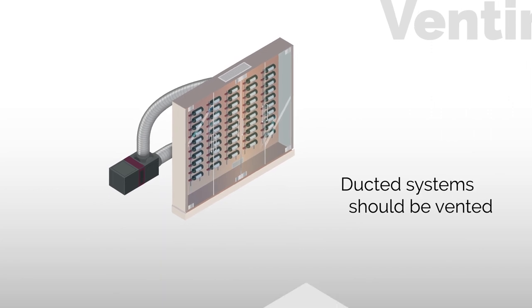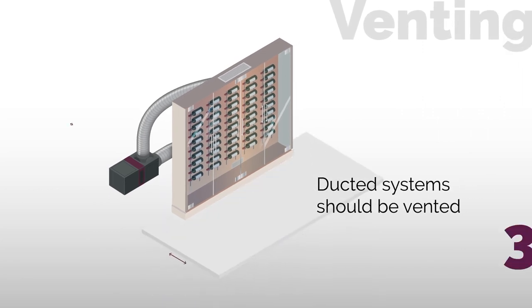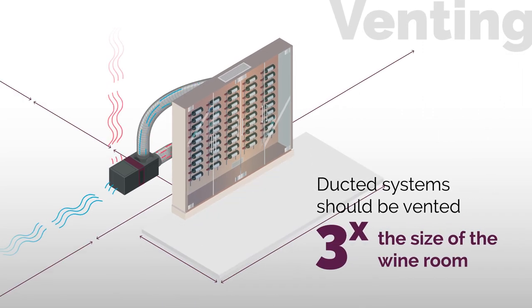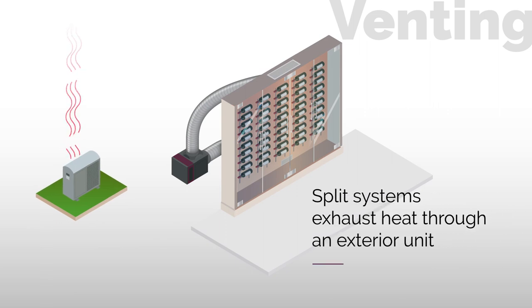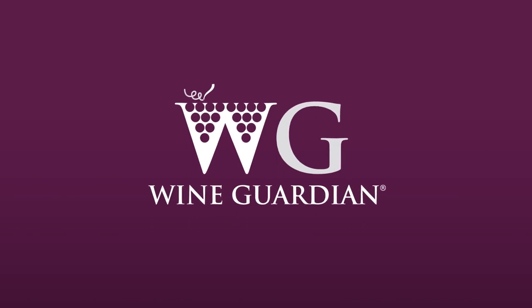Lastly, self-contained ducted systems should be vented to a space three times the size of the wine room, whereas split systems exhaust heat through an exterior condensing unit.